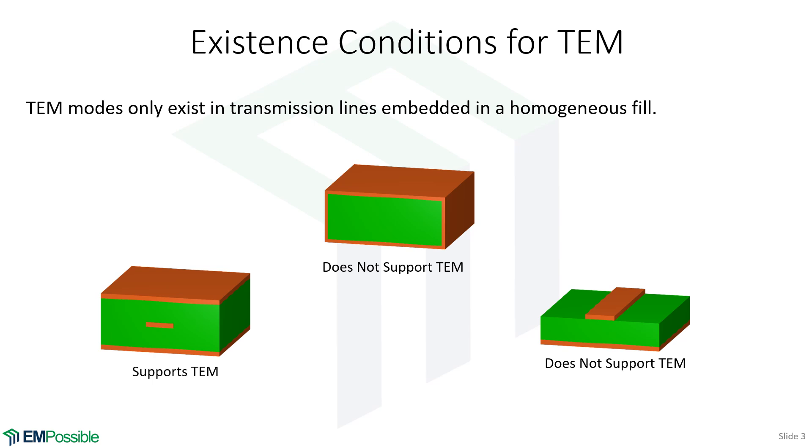What about a strip line? Well, we have three conductors here. That's two or more. So it meets the definition of a transmission line. And it has a homogeneous fill surrounding the signal line. So this would support a TEM mode. It's a transmission line and has a homogeneous fill.